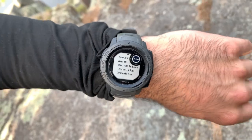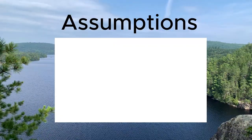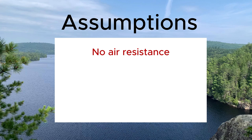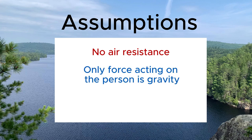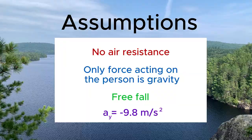I also need to make some assumptions in order to answer this question. The first is that as the person is falling there is no air resistance, meaning the only force acting on the person is gravity. So we can say it's free fall motion and the acceleration in the y component would be negative 9.8 meters per second squared.